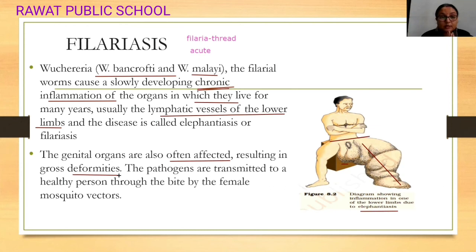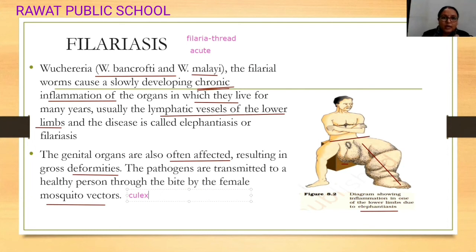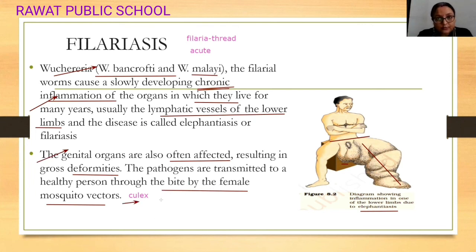The pathogen is the filarial worm. The spread of infection is transmitted by the female Culex mosquito. Culex is the mosquito vector that transmits this filarial worm to a healthy person. To summarize: the causing organism, the affected organs (lymphatic vessels, genital organs), symptoms of chronic inflammation and deformity, and the vector being the female Culex mosquito.